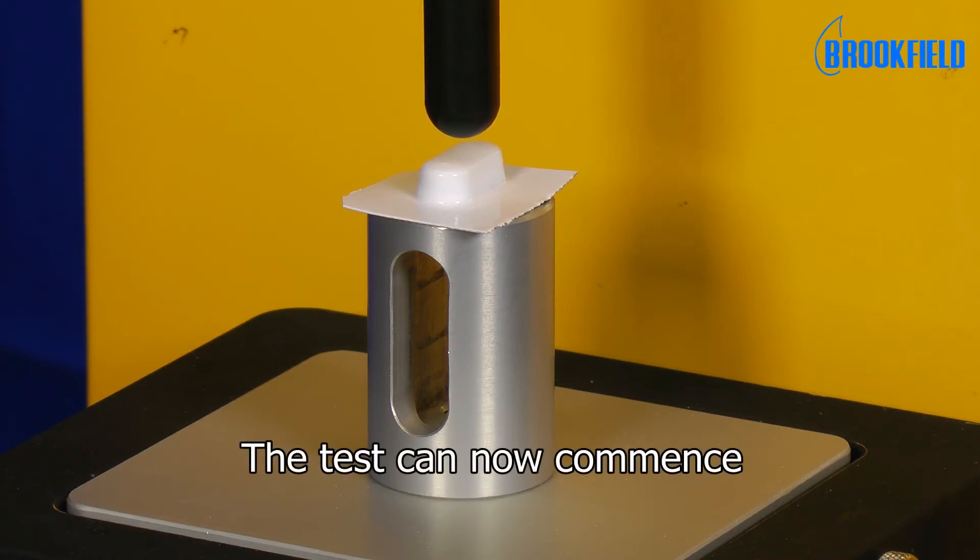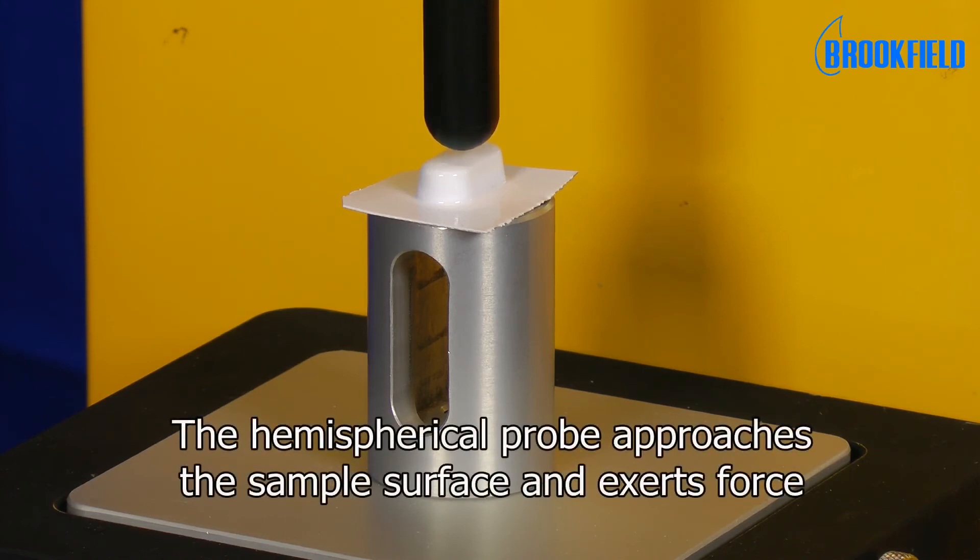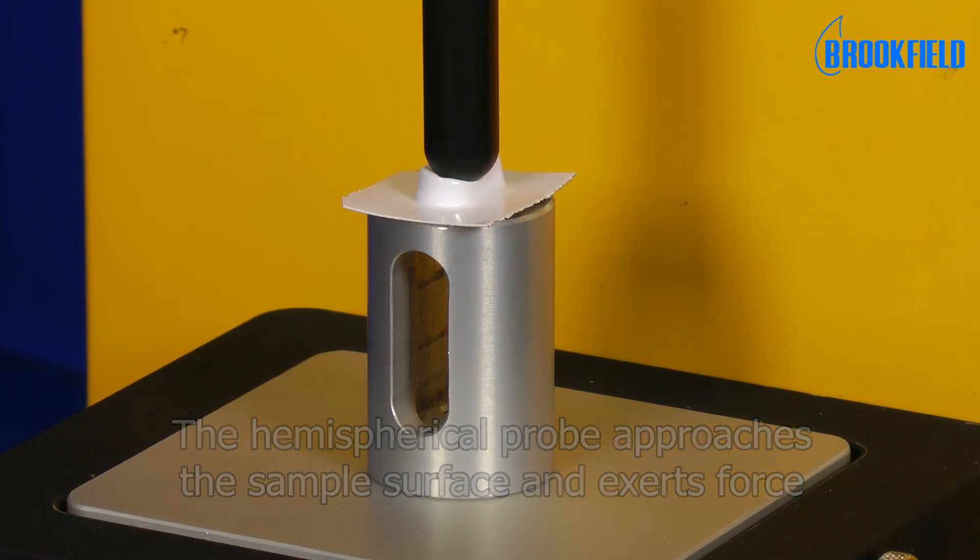We can now start the test. Here you see the hemispherical probe approaching the blister pack. At the sample surface, the probe exerts an increasing force on the blister pack, extracting the tablet in the process.